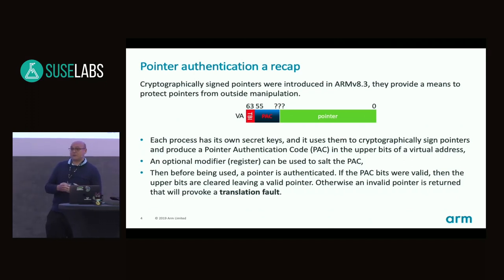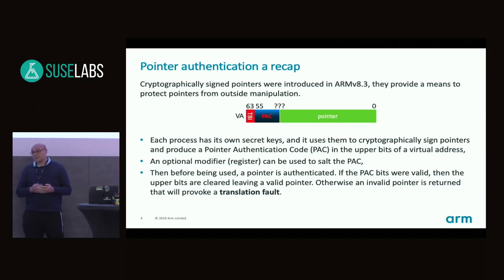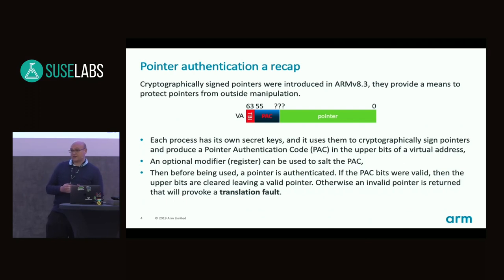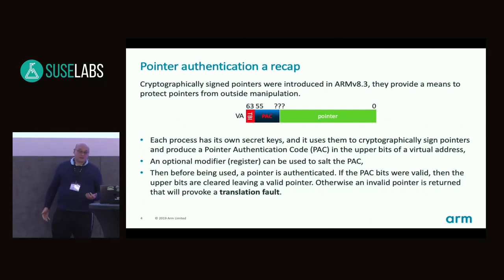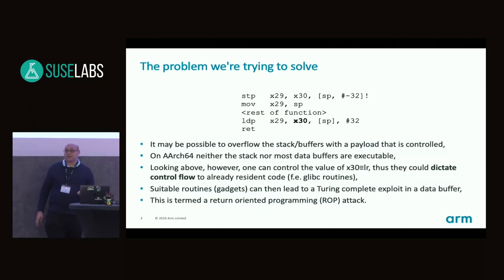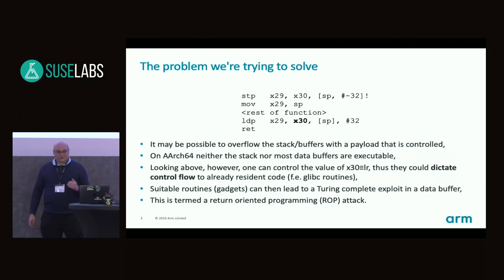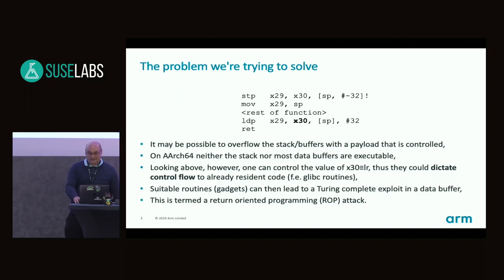When we want to dereference that pointer, we ask the CPU to authenticate it. If the authentication fails - in other words, if the pointer has been manipulated - we will get an invalid pointer back, which is guaranteed to provoke a translation fault. So essentially, if somebody were able to manipulate the stack such that X30, the link register, was invalid, with pointer authentication we could detect that before the return statement and not transfer control to an exploit.